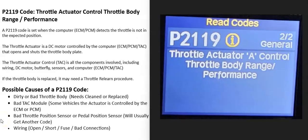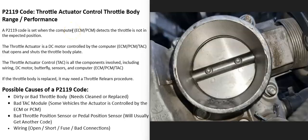Today I'm talking about a P2119 code — what it is and how you could go about fixing it. A P2119 is a throttle actuator control throttle body range/performance code. The throttle body controls all the air going into the engine; there's a plate that opens up as the gas pedal is pressed, and more or less air goes into the engine depending on how open that plate is.